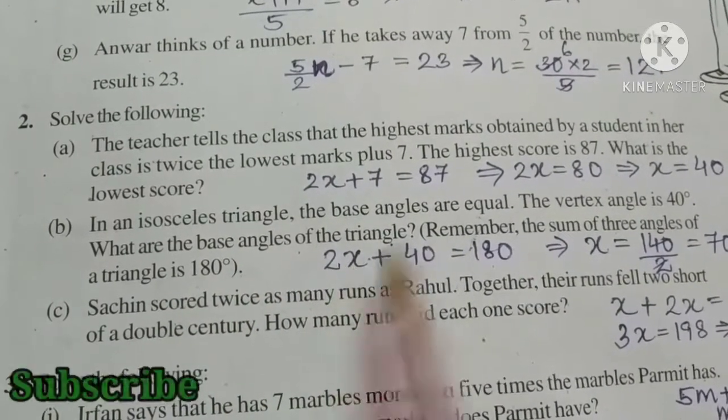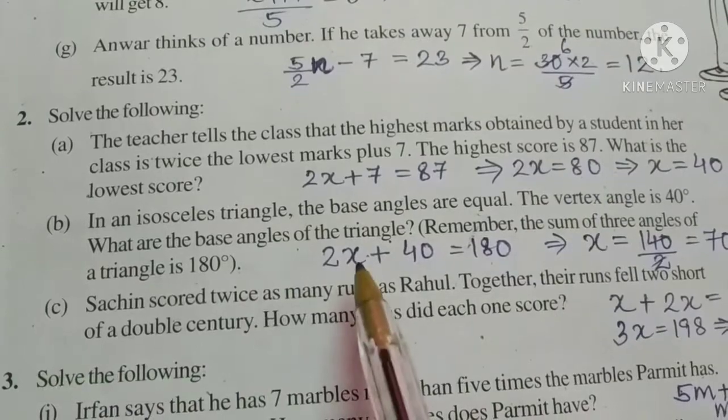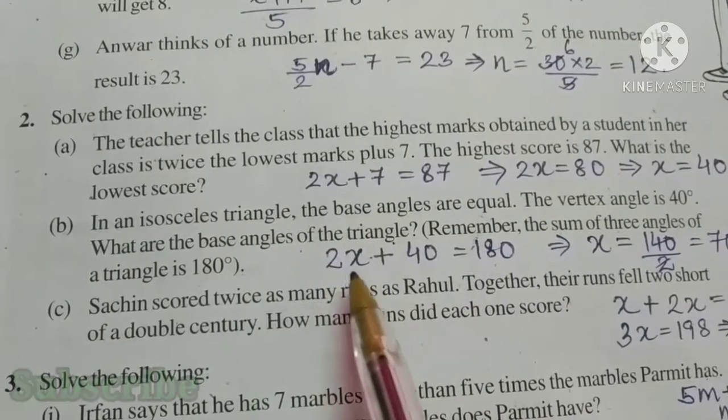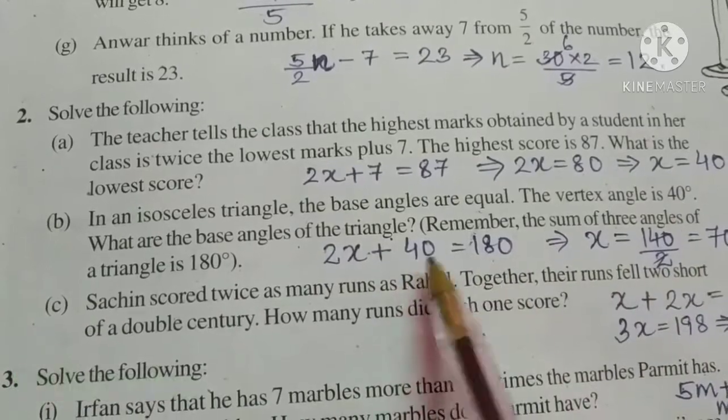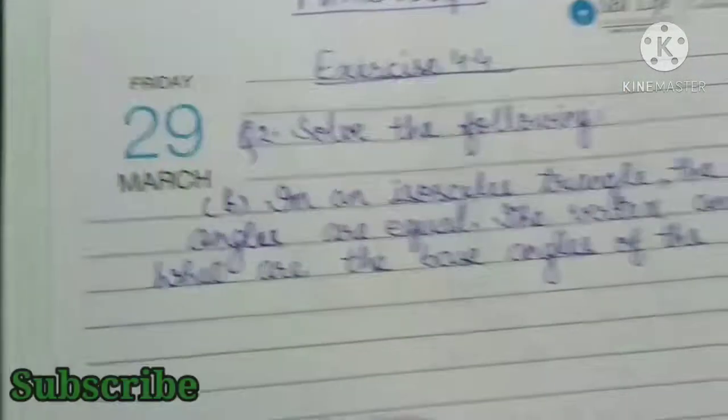Let us take the base angle as x. So, 2 base angles, 2x plus vertex angle 40 is equal to 180. Let us solve this.